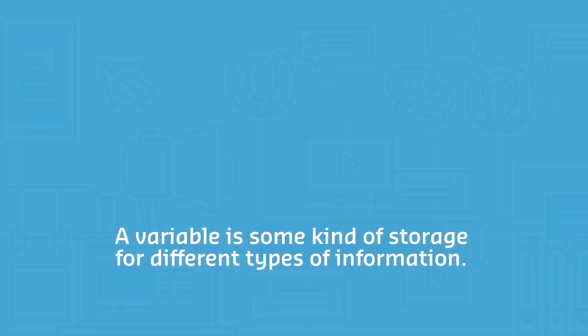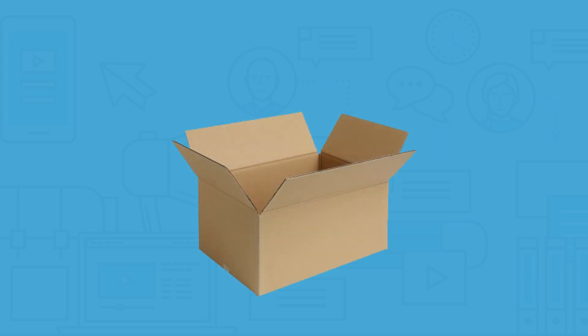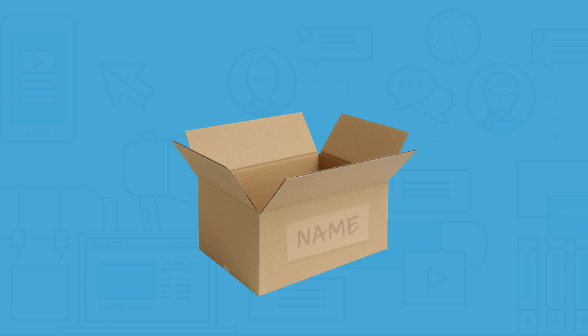Before we dive into variables in Articulate Storyline, let me explain what a variable exactly is. You can see a variable as a kind of storage for different types of information. This is a bit abstract, so let's make it more simple. Try to imagine a variable as a box where you can store information in. For example, in Storyline, I can create a box with the label 'name', and in this box I can put my name, Mark, as information in it.